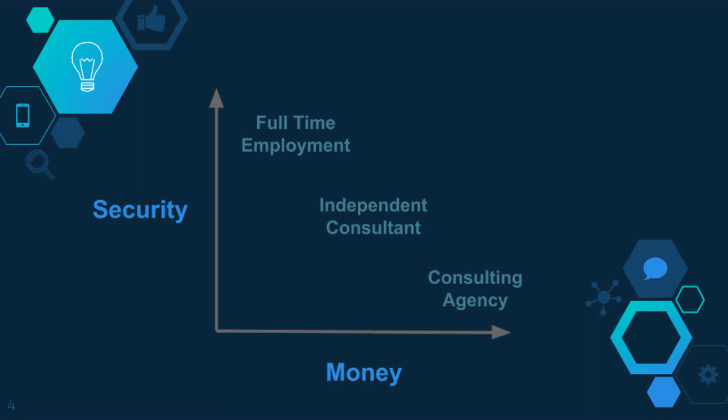Looking at the three different verticals for earning income in this field — you can see in the chart that full-time employment is the most stable and most secure, but the earning potential is lowest. Moving to independent consulting, you have less security but more income. And then all the way to the right is building your own agency, which is by far the riskiest way to earn an income, but with high risk comes high reward.